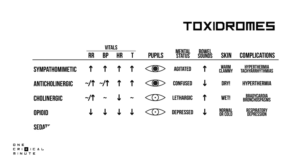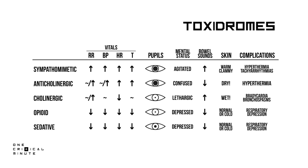Sedatives like alcohol and benzodiazepines give a similar effect to that of opioids, however, their pupil size is usually normal. For more information on the specific toxidromes, go and watch the tox series.